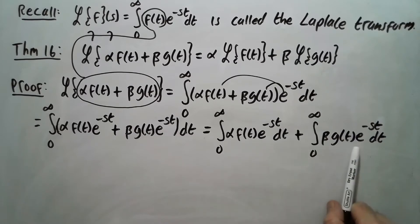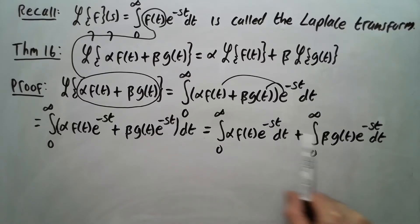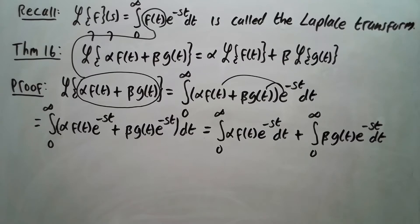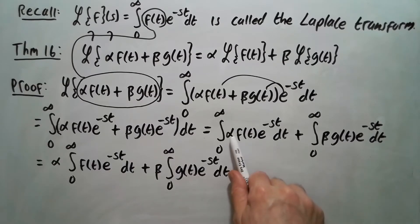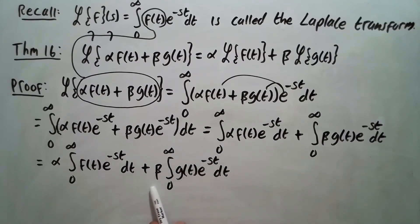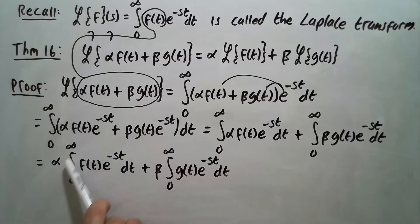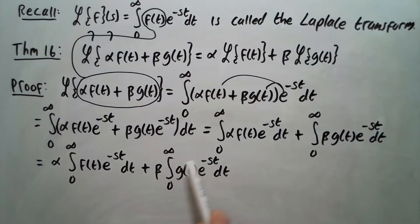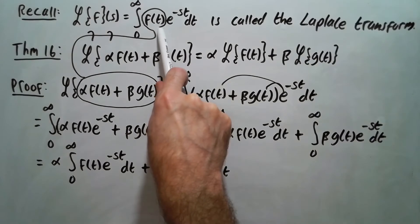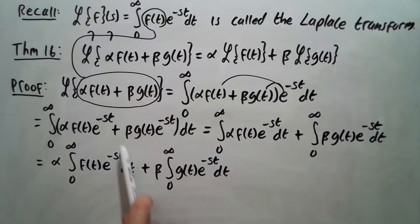We pull alpha out of the first integral and beta out of the second integral. Then you should recognize that the first integral — comparing it with the Laplace transform definition — is just the Laplace transform of f by definition. And looking at the second integral, g times e to the minus st from 0 to infinity, that's by definition the Laplace of g. So this is Laplace of f and this is Laplace of g. Making those substitutions, we get the result.